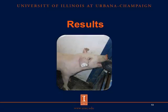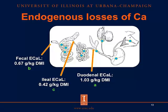Now let's move to the results. These are the endogenous losses of calcium. For the duodenal endogenous losses of calcium, we determined 1.03 grams per kilogram dry matter intake. This is likely due to the endogenous calcium secretion from saliva, gastric juice, bile, and pancreatic juice. For the ileal endogenous losses of calcium, we determined 0.42 grams per kilogram dry matter intake, which was less than the duodenal endogenous loss. Therefore, we suggest that some of the endogenously secreted calcium is reabsorbed in the small intestine. For the fecal endogenous losses of calcium, we determined 0.67 grams per kilogram dry matter intake, which was greater than the ileal but less than the duodenal endogenous losses of calcium.